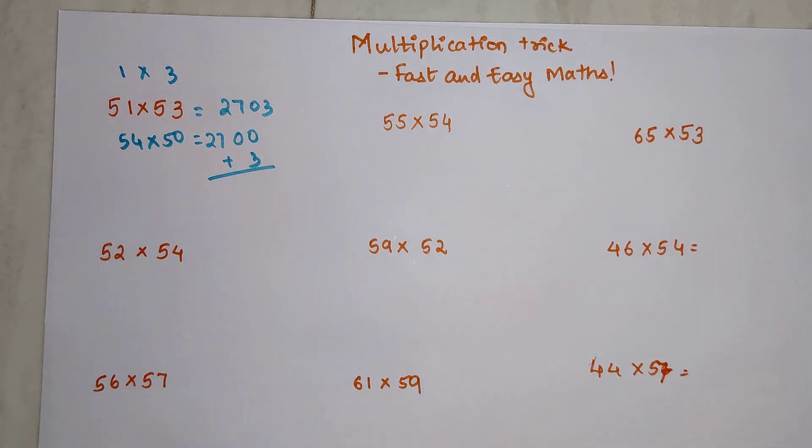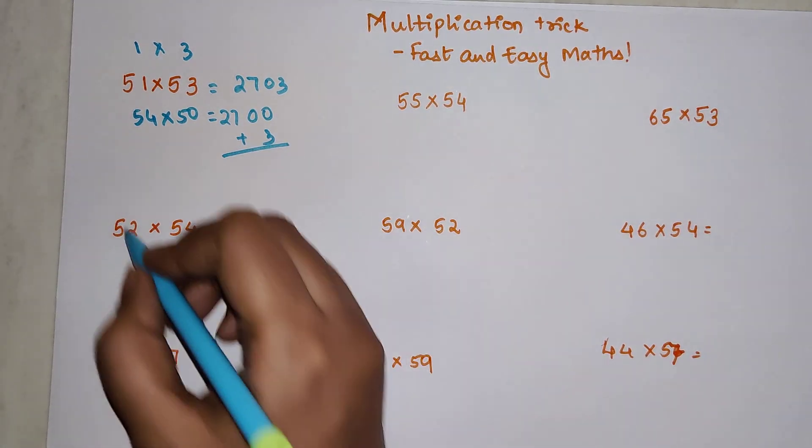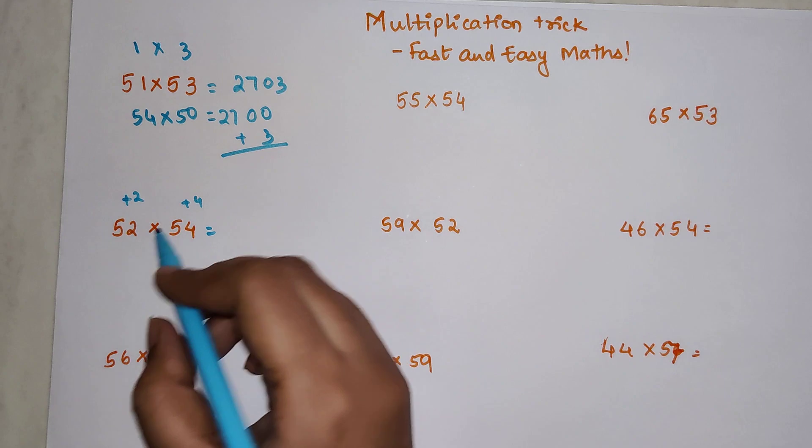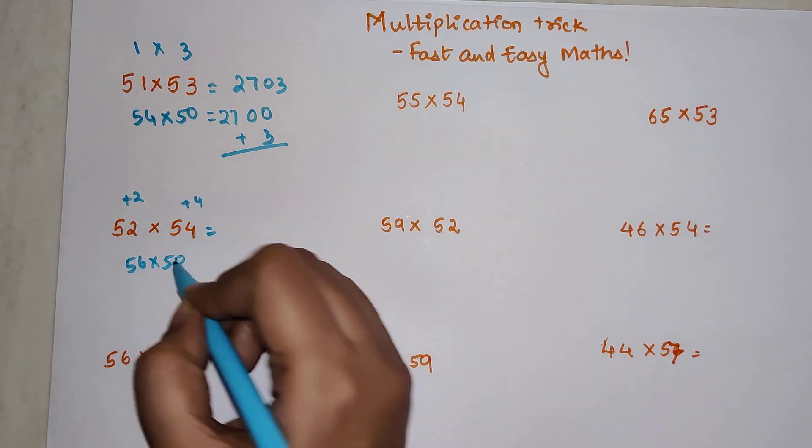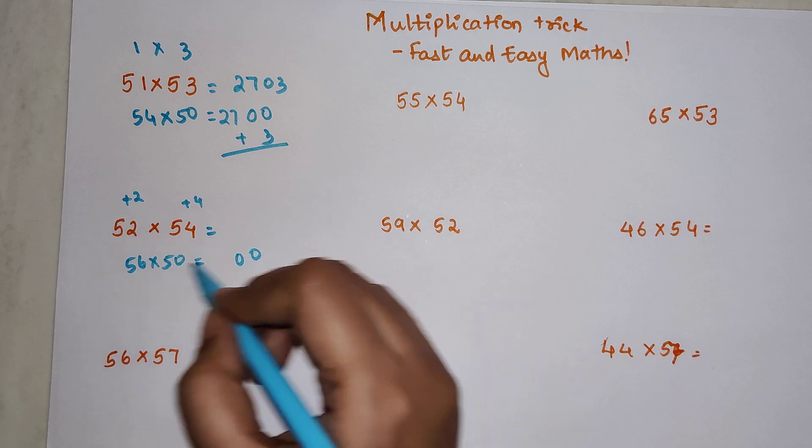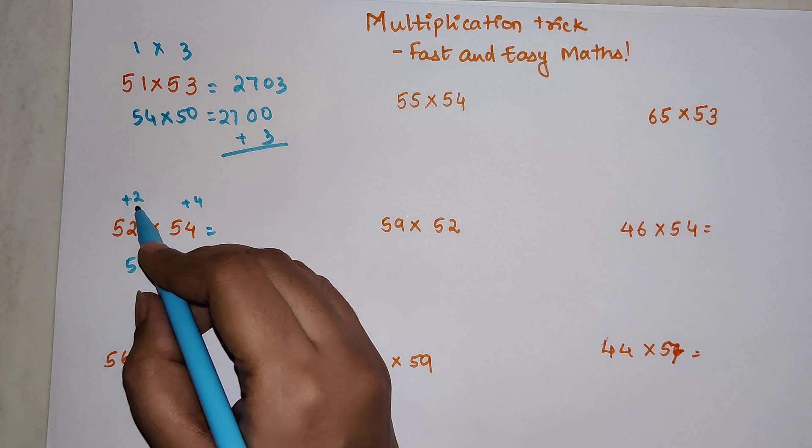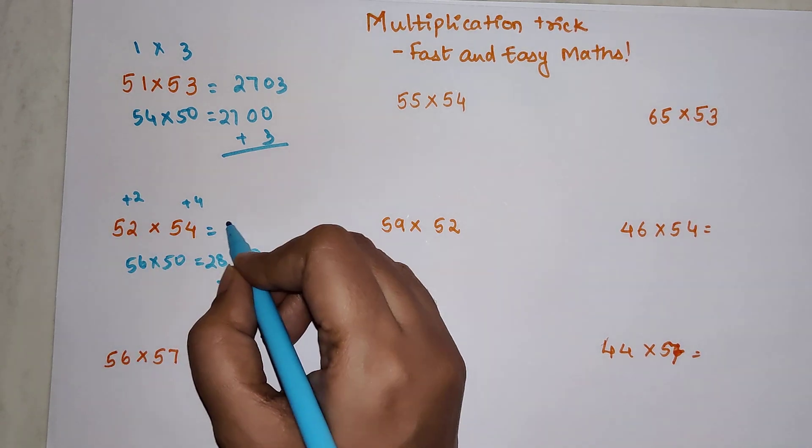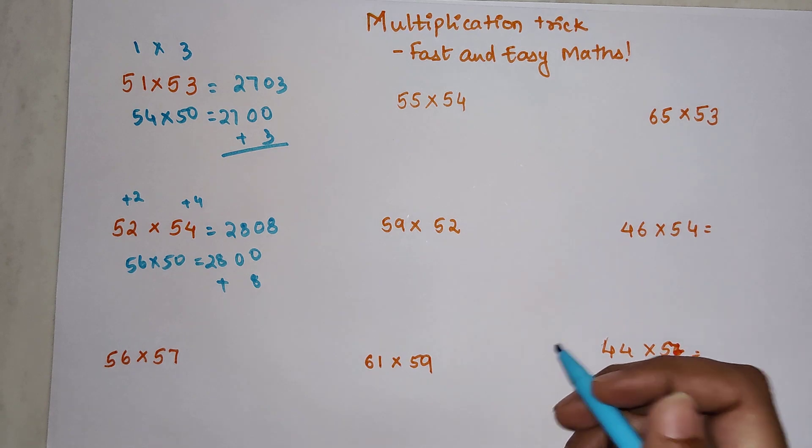If you like the way I'm explaining, please hit the like button because that gives me tremendous encouragement. Now let's look at the next one. This is plus 2, this is plus 4. When you add either way you get 56 times 50, which is 2800, and to that you add 2 times 4 which is 8. Your answer is 2808.